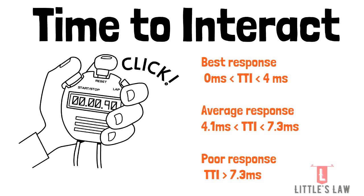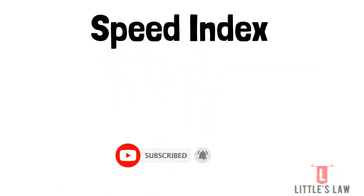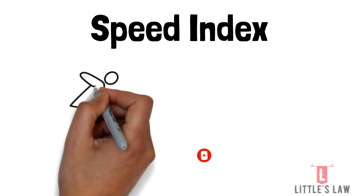TTI can be improved by reducing the payload, decreasing the JavaScript, lowering the main thread work, and optimizing third-party JavaScript. Using all these tuning methods, the Time to Interact will be faster — ideally less than 4 milliseconds, which is the best SLA.